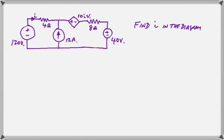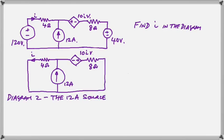Now, we reproduce the original diagram here so that you can follow what has changed in diagram two. Notice now we have the 12-amp source, and we have replaced the 40-volt and the 120-volt with just pieces of wire, and we have a simpler diagram.